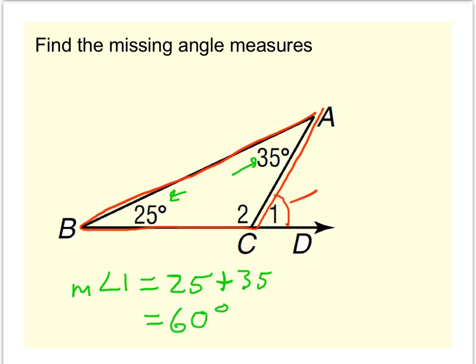Lastly, we need to find angle 2. There are different ways to go about finding it. One possibility is to look at triangle ABC, and using the triangle sum theorem, the three angles have to add up to 180. So 25 plus 35 plus angle 2 has to add up to 180. So that's one way to get the fact that the measure of angle 2 is 120.